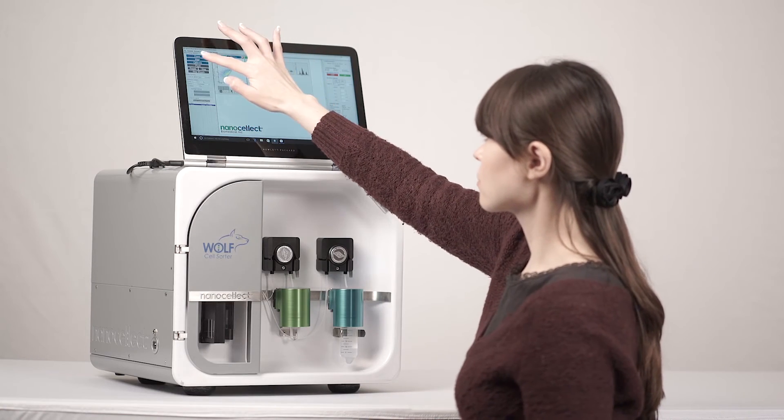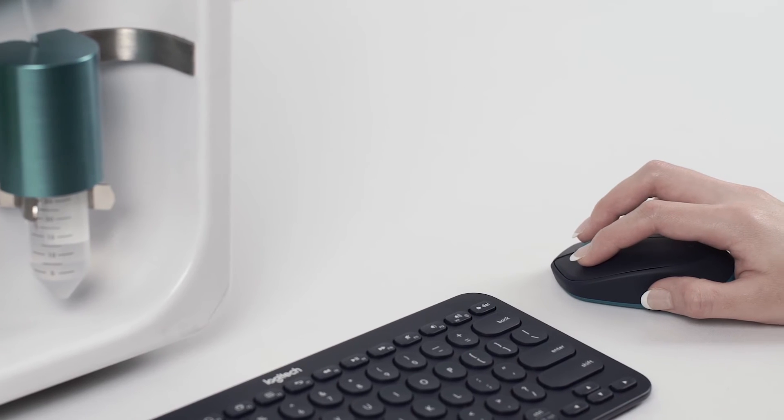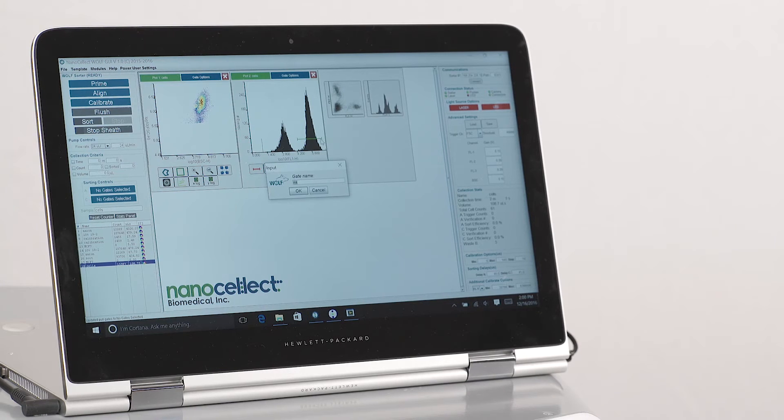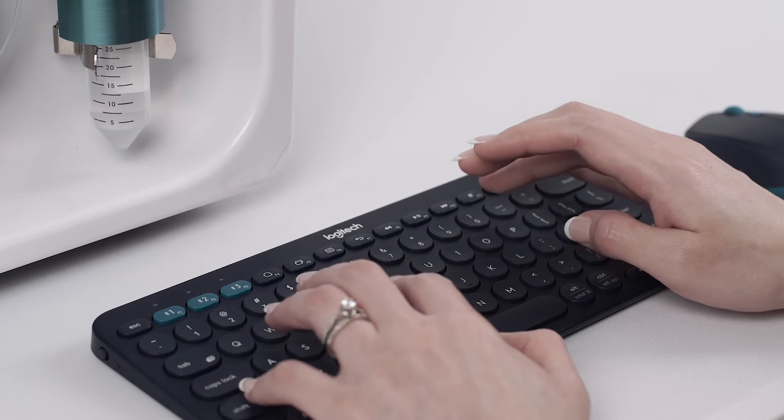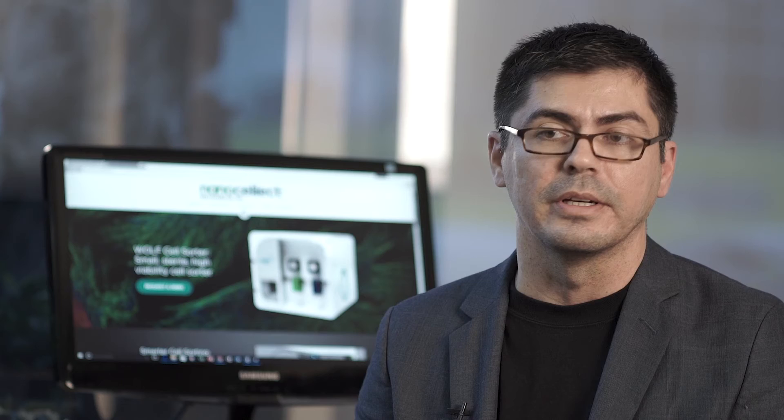During the priming step, you can initiate your alignment. Once alignment is complete, you set your gates and pick your positive cells that you want to sort. You can then press sort and begin sorting and you're done.